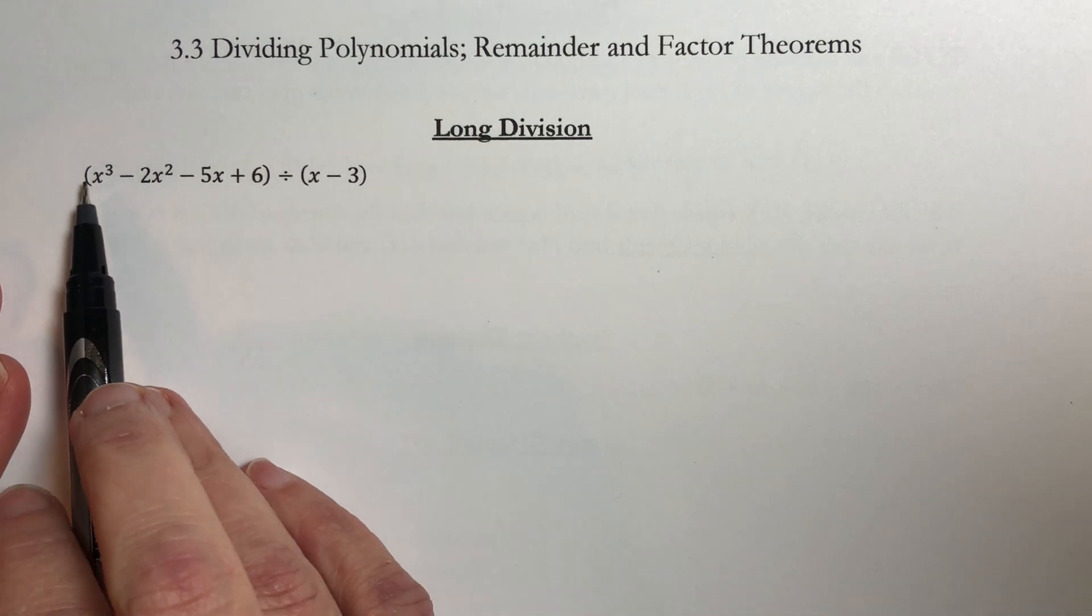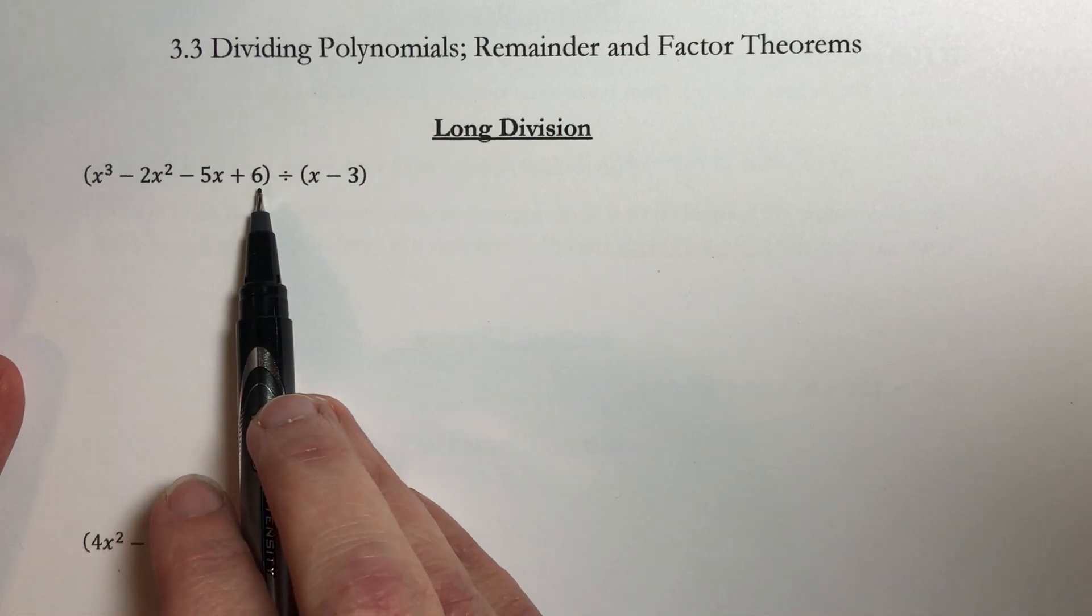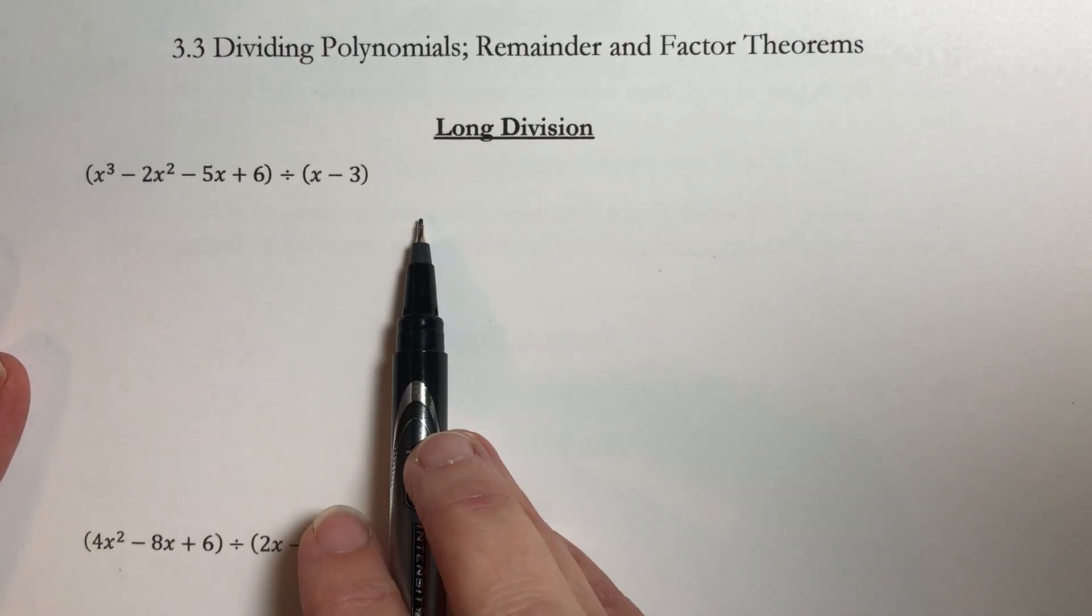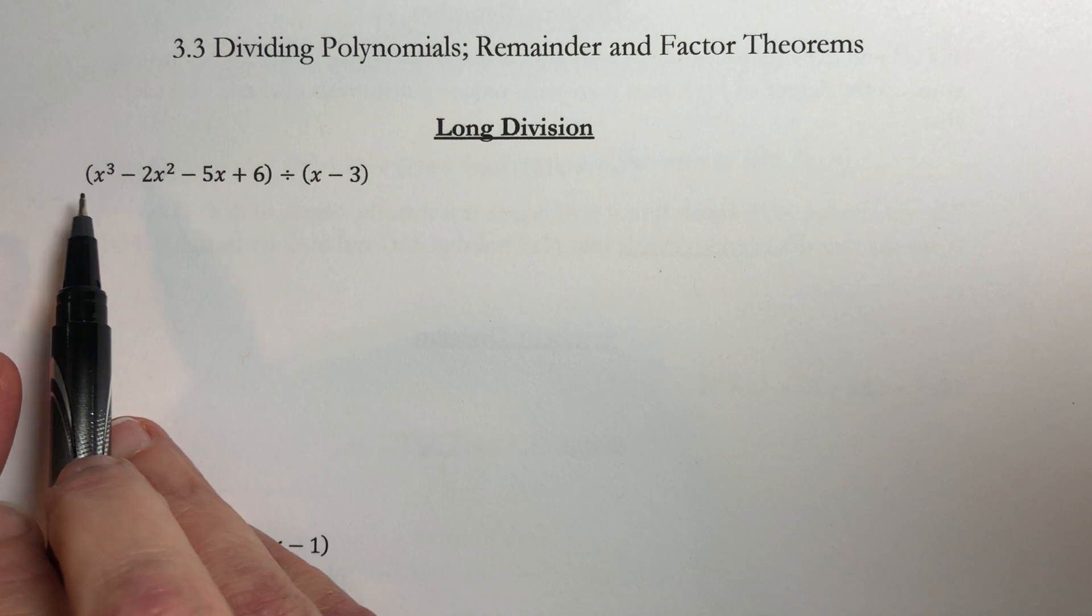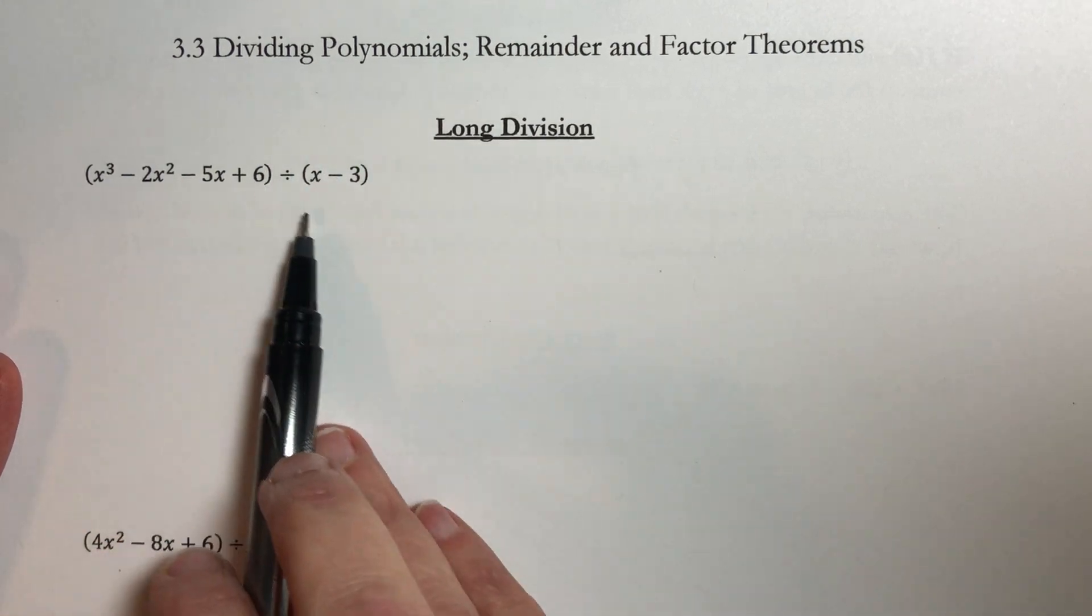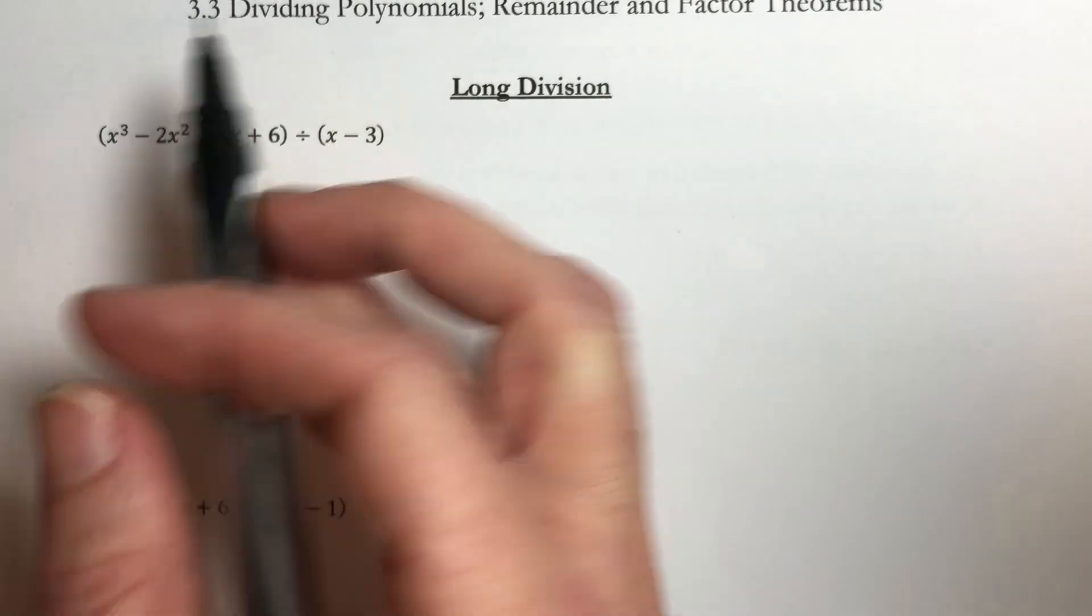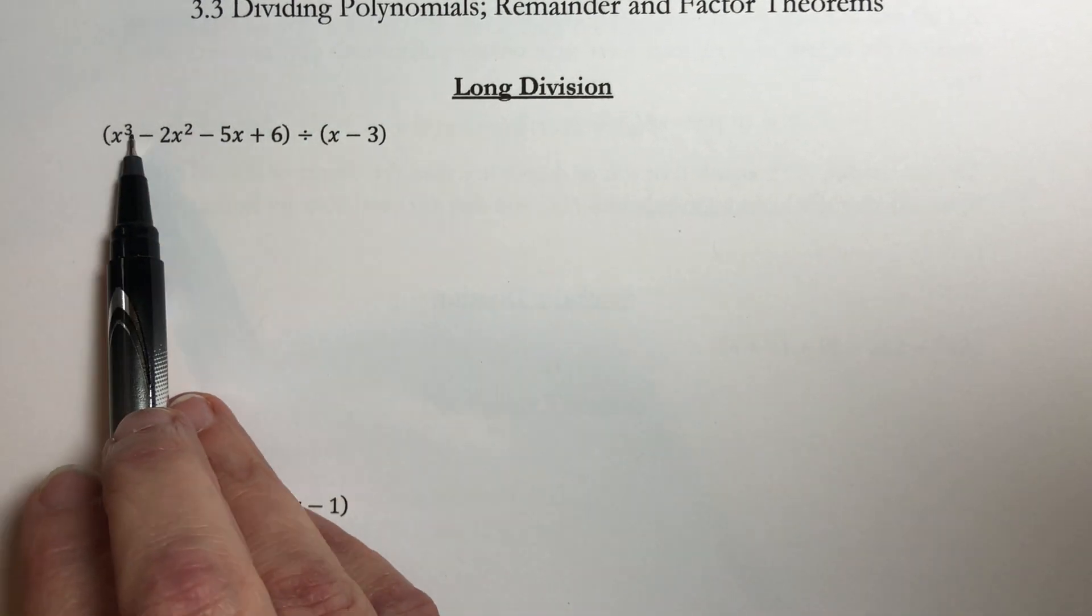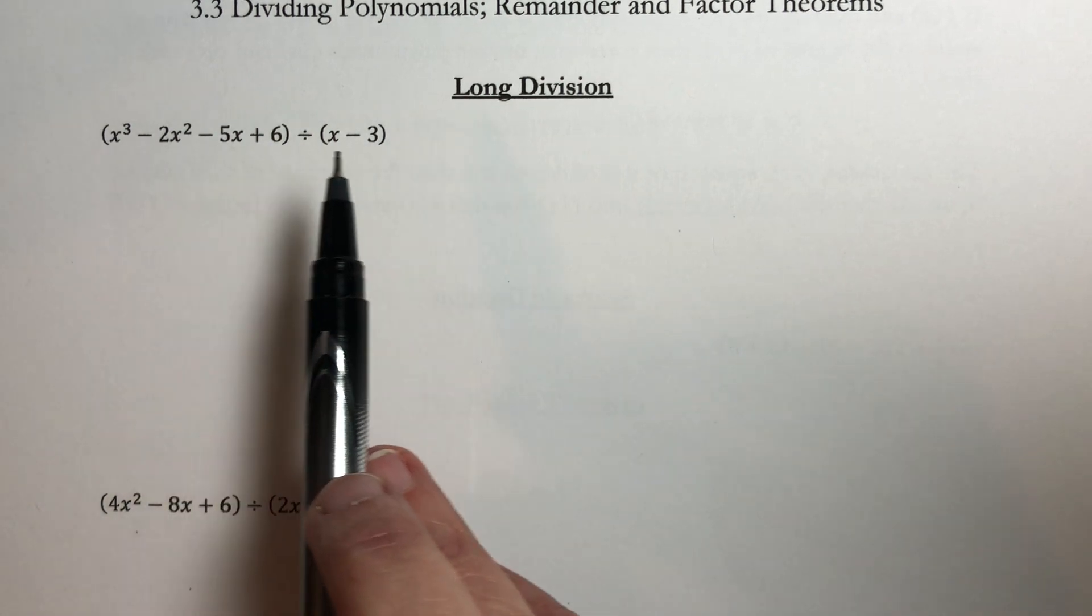So if I want to divide the polynomial x cubed minus 2x squared minus 5x plus 6 and I want to divide this by the polynomial x minus 3. There are a couple of things you need to check for before you write down your problem. You want to look at each piece and make sure that the polynomials are written in descending power order. So you want to start with your largest exponent and you want to end with your smallest. And you also want to make sure that you don't skip over an exponent.